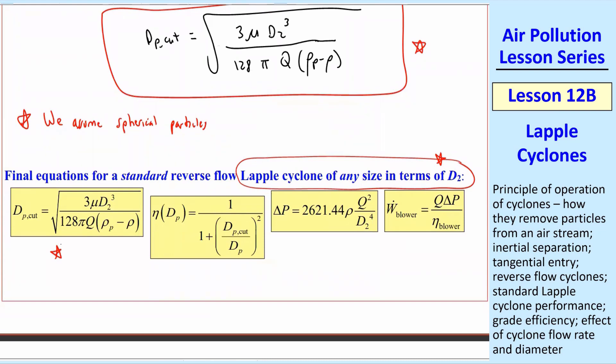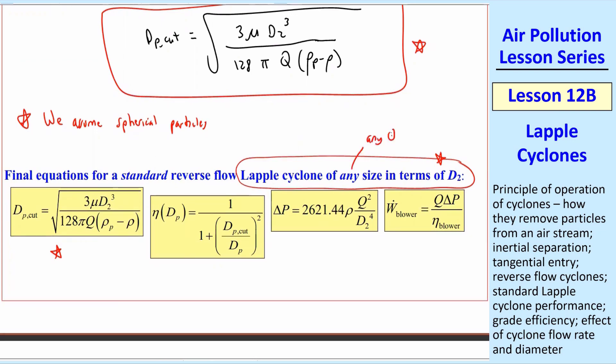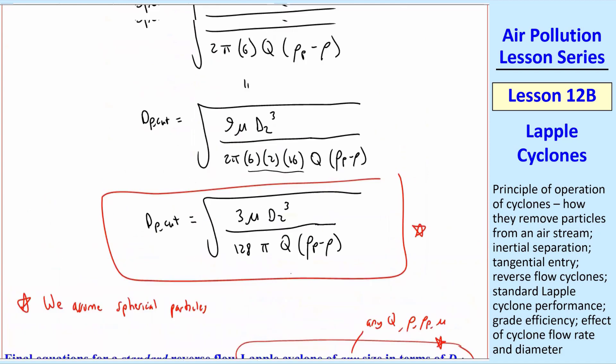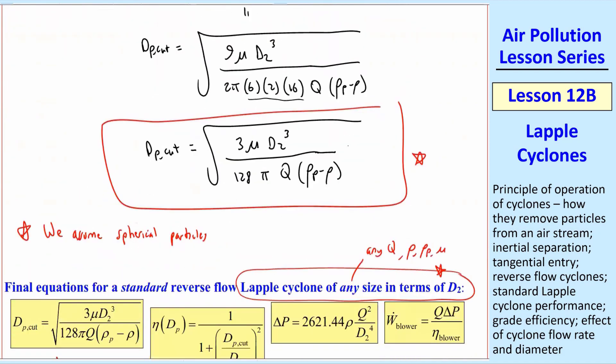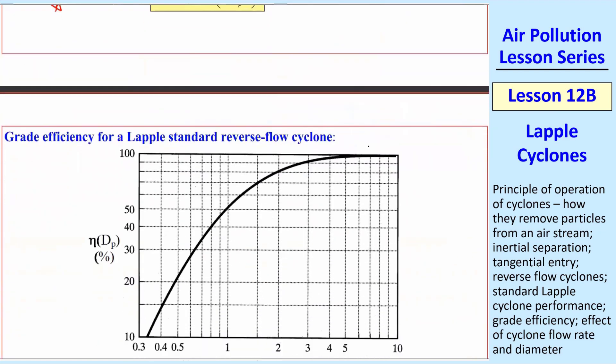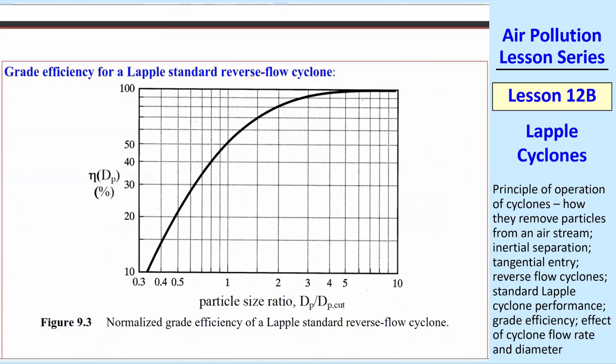So the final equations, a Lapple cyclone of any size in terms of D2. These will be our equations. These are all in terms of D2, and they're useful for a Lapple cyclone of any size, any Q, any rho, any rho_P, any mu, etc. Just one set of equations for any Lapple cyclone, as long as you make the Lapple cyclone with these dimensions that are standard. And that's what people typically do. Then you don't have to reinvent the wheel. There are variations of Lapple. There's other kinds, but this is by far the most popular one that's used out there.